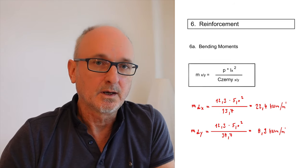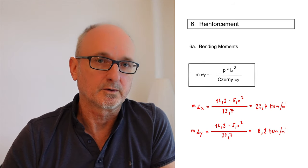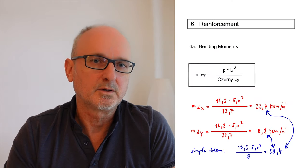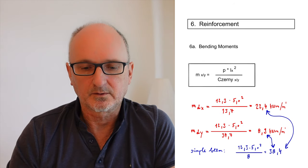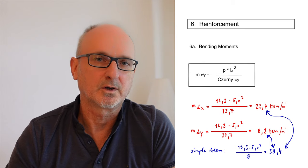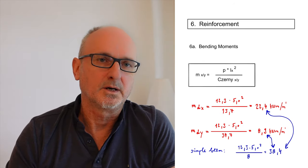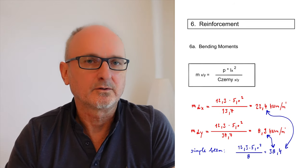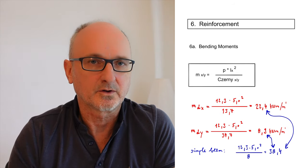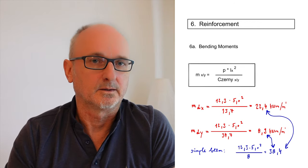By using the design loads in these formulas, you automatically get the design moments — meaning the safety factors are already built into the calculation. Comparing with a simple beam (QL²/8 or PL²/8) gives a bending moment of 38.4 kNm, which is crucially higher than the slab moments. This is the whole point: to reduce bending moments and therefore reduce the reinforcement used.